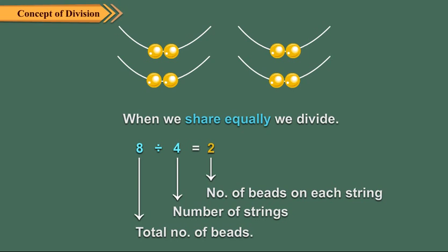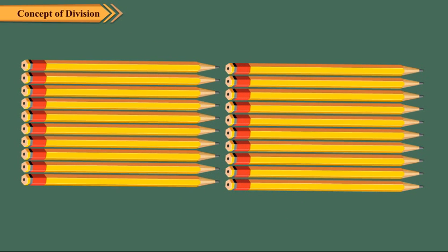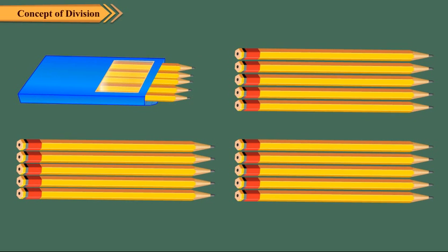Let us now take an example of equal grouping. We have 20 pencils. We want to put five pencils in each packet. How many packets will we need? We first put five pencils in one packet.